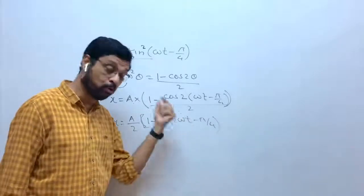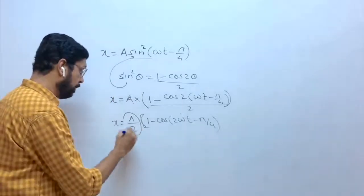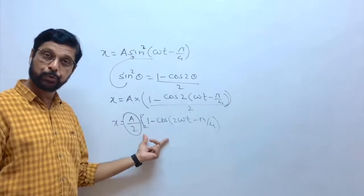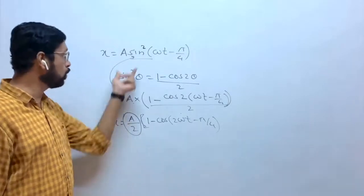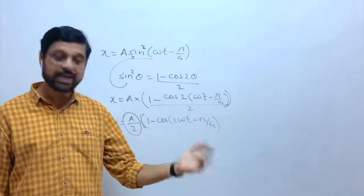We have to find the amplitude. So what is the amplitude from this formula? It is A/2. So the amplitude of this motion is A/2. So your answer is (a).